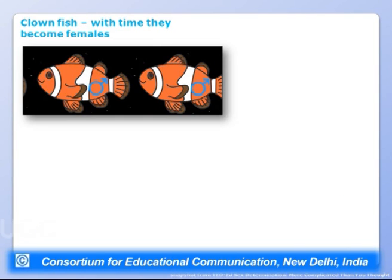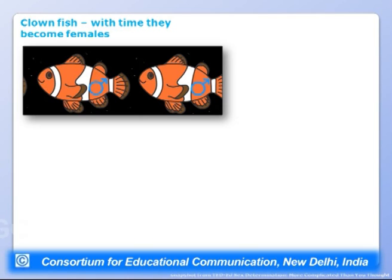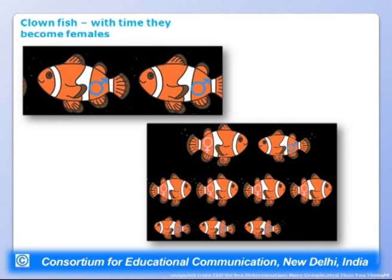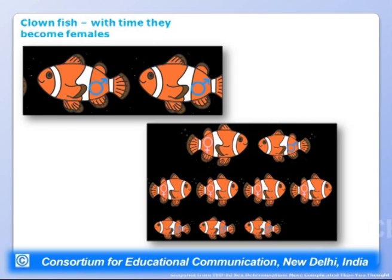In clownfish, sex determination depends on time and growth. They begin life as males; as they grow, they turn into females. Within a colony, there is a hierarchy — as males grow older, they become females. The female mates with a male to produce progeny, then dies; the male then becomes female, with one from the next level rising to replace it. So in clownfish, sex determination depends on the time of growth.